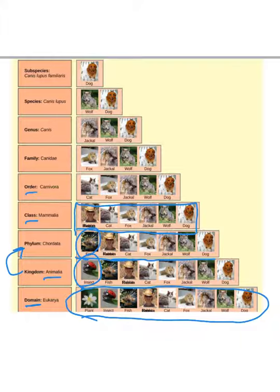Next we have order. So even more specific, we're talking about Carnivora. So you've got cats included, but you lose the human. So humans don't belong in that particular order. So we now have cats, foxes, jackals, wolves, and dogs.